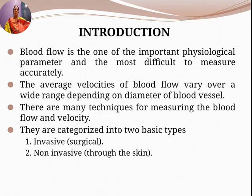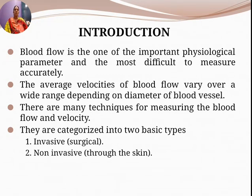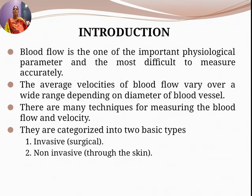Introduction. Blood flow is one of the important physiological parameters and the most difficult thing to measure accurately. The average velocity of blood flow varies over a wide range depending on the diameter of the blood vessel.